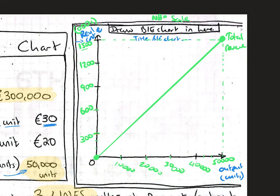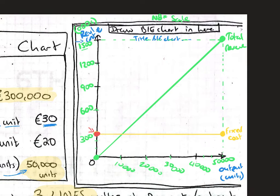We find €300,000 on the vertical axis and at zero units it's over here. We draw the line across to 50,000 units — this is our fixed cost line, the cost that remains the same regardless of changes in output. A handy tip: wherever the fixed cost line starts will also be the starting point of our total cost line, so we now need to find one more total cost point to connect them.